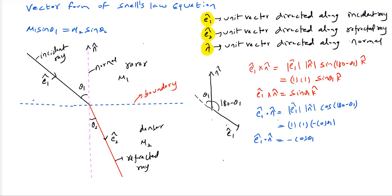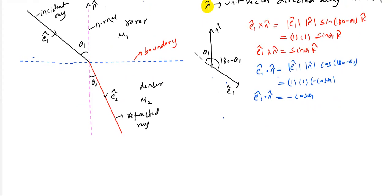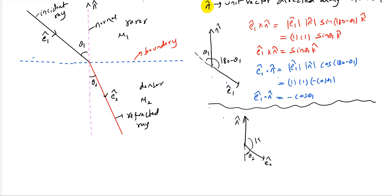Similarly, we'll go to Ê₂ and n̂. The angle made by the refracted ray with the normal is θ₂, so the angle between n̂ and Ê₂ will be 180 minus θ₂. The cross product Ê₂ × n̂ = 1 × 1 × sin(180 − θ₂) K̂ = sin θ₂ K̂.